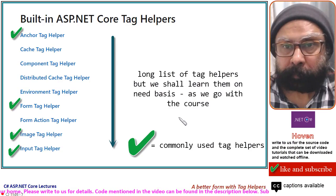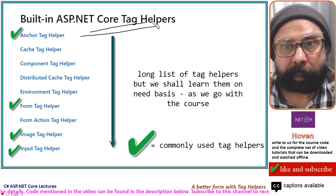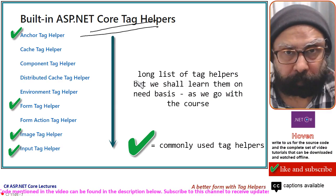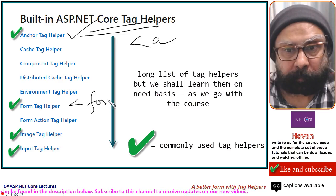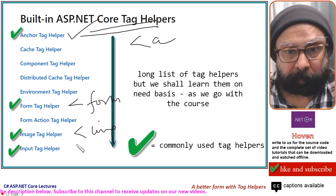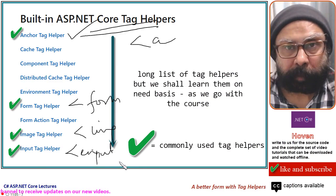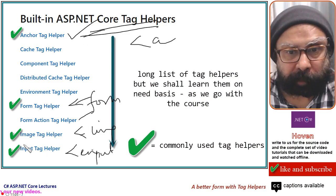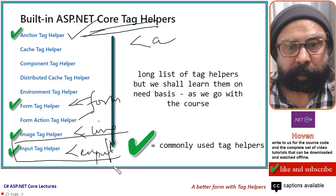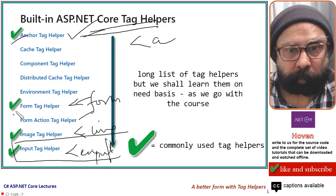There are many ASP.NET Core tag helpers available: for anchor tags, forms, images, and inputs, among many more. We will learn all of them as we go — there is no point discussing everything today. We will cover them on a need basis, starting with these most commonly used ones.